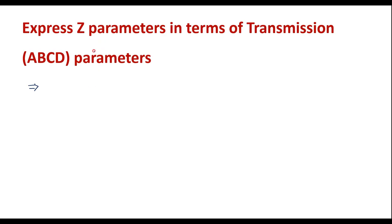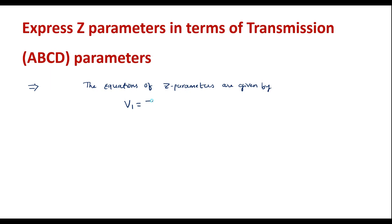First, let me write the equations of Z parameters. The equations are given by: V1 = Z11·I1 + Z12·I2 — call this equation 1 — and V2 = Z21·I1 + Z22·I2 — call this equation 2.